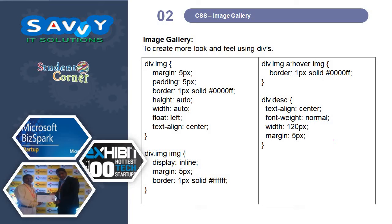Now the second topic is image gallery. This is a very important topic and students very much like to do activities related to images. To create more look and feel using divs — for div.image, the properties are: margin is 5px, padding is 5px, border is 1px solid color, height is auto, width is auto, float is left, and text-align is center.